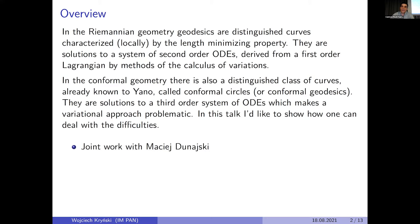That makes a variational approach problematic, as the Euler-Lagrange equations are typically of even order. In this talk, I would like to show how one can deal with these difficulties. This is based on joint work with Maciej Dunajski from Cambridge.